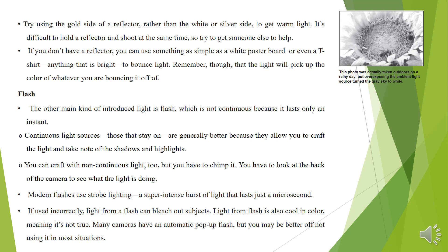Flash. The other main kind of introduced light is flash, which is not continuous because it lasts only an instant. Continuous light sources — those that stay on — are generally better because they allow you to craft the light and take note of the shadows and highlights. You can craft with non-continuous light too, but you have to chimp it — you have to look at the back of the camera to see what the light is doing. Modern flashes use strobe lighting, a super intense burst of light that lasts just a microsecond. If used incorrectly, light from flash can bleach out subjects. Light from flash is also cool in color. Many cameras have an automatic pop-up flash, but you may be better off not using it in most situations.